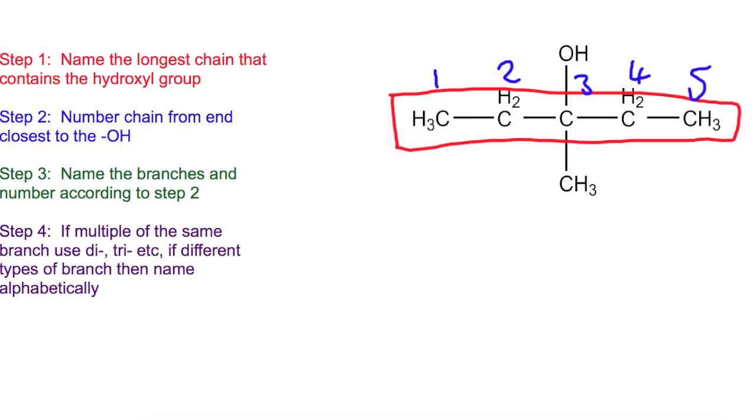So because we've got five carbons it's going to be based on pentan. And our OH group is on the third carbon. So we've got pentan, three, ol.